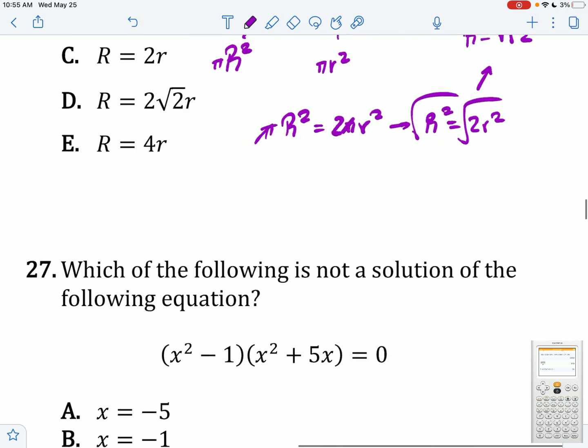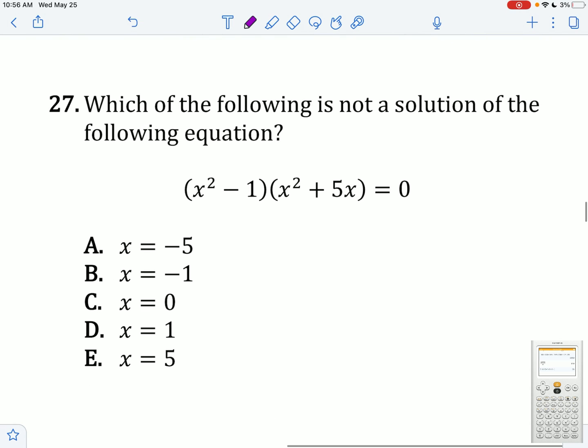Which of the following is not a solution of the equation? Let's just factor this. We can do this with difference of squares. We can do this just by bringing out an x. Solutions are x equals negative 1, 1, 0, negative 5.